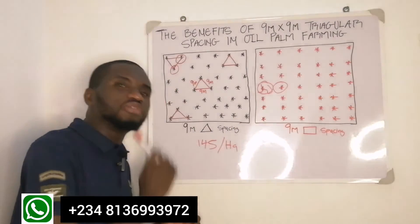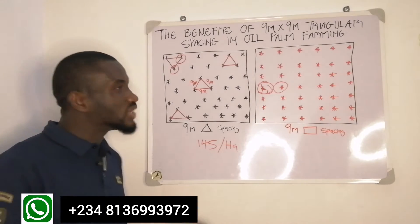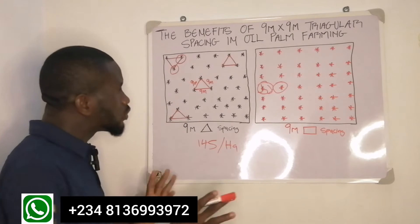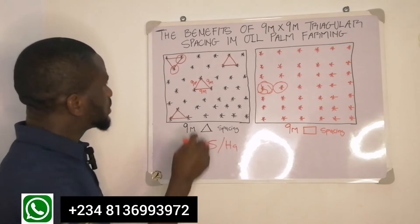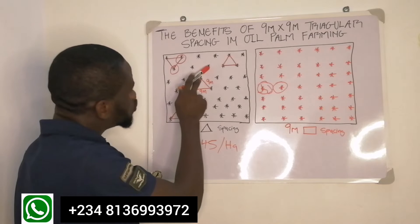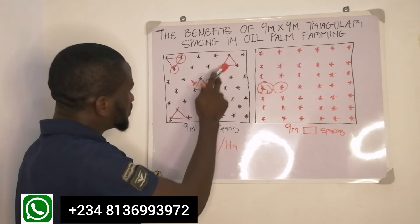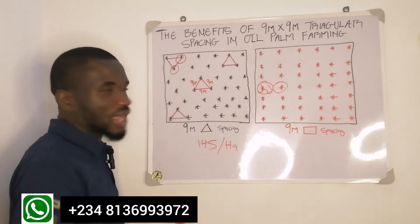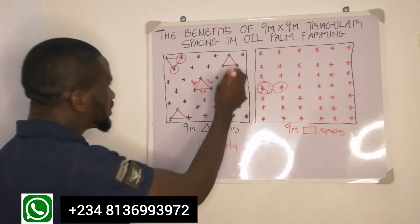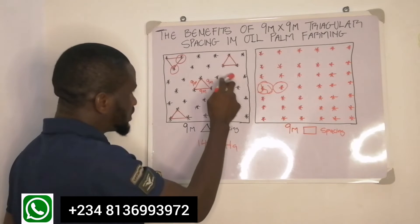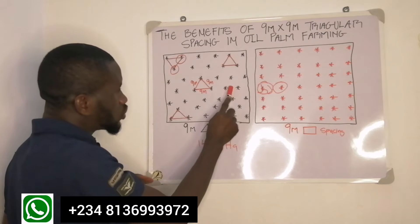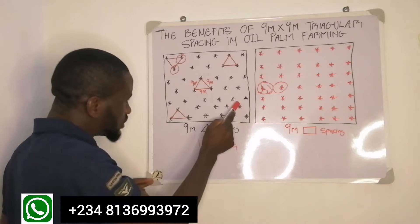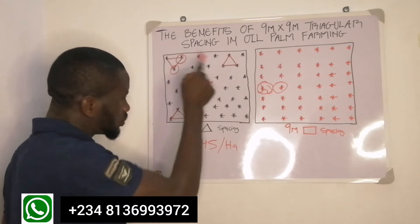If in any way any of the trees are shading themselves, there will be a problem in the ripening of the fruit. That is why the spacing is done this way. If light is coming from one direction, there is no way one tree will shade another because they are not on the same line. The shadow of one tree will fall in between the others, so each tree will still have access to light. That is why this arrangement is very important.